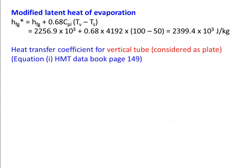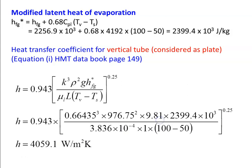For the vertical tube, we refer to page number 149 for the vertical surface correlation, which is applicable for both vertical tube and vertical plate. For a vertical tube we substitute only L — the vertical length of the tube — not the diameter. The equation is H = 0.943 × [K³ × ρ² × g × HFG*] / [μ × L × (Tv − Ts)]^0.25. You can pause the video to verify the calculation using a calculator. Substituting all numerical values, the heat transfer coefficient H = 4059.1 W/m²·K.